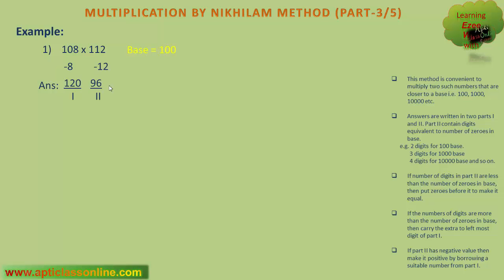The second part has to be written in continuation to the first part. But before finalizing the answer, we will have to check whether the second part contains as many digits as the number of zeros in the base, that is, 2 digits. Here it already contains 2 digits. So the answer is 12096.